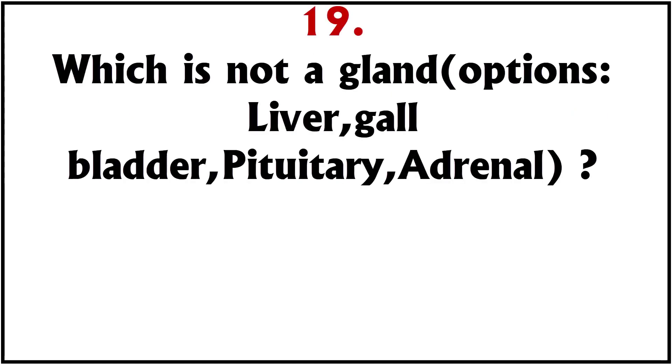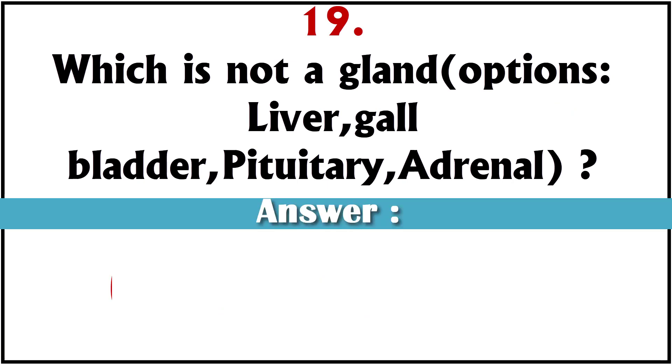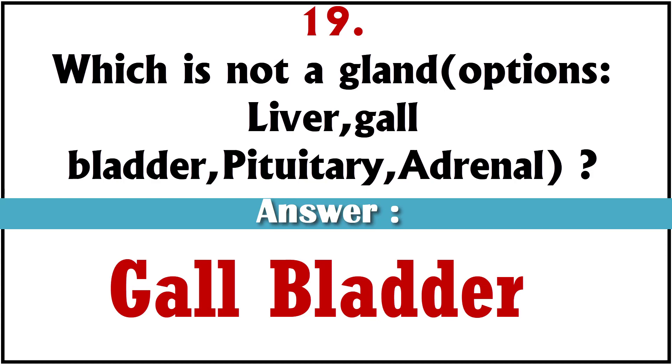Which of the following is not a gland? Options: Liver, Gallbladder, Pituitary, Adrenal. Answer: Gallbladder.